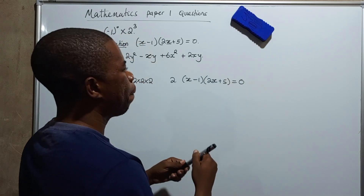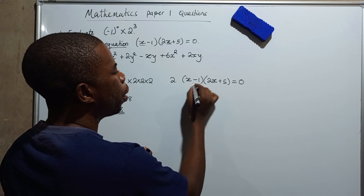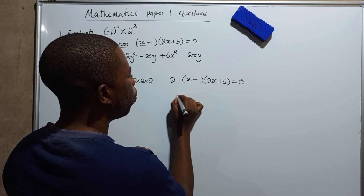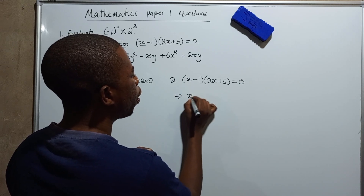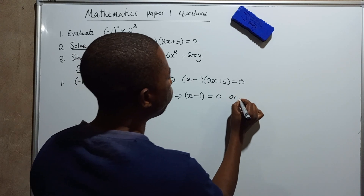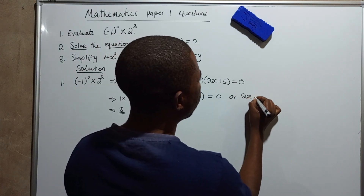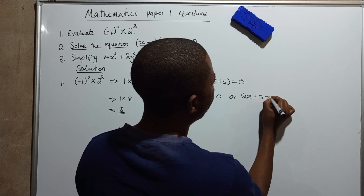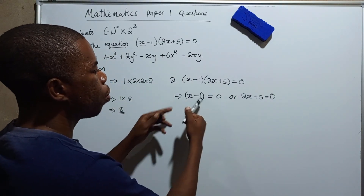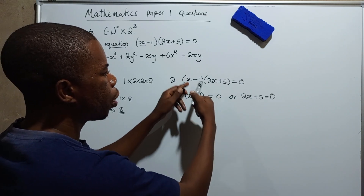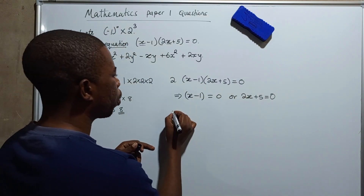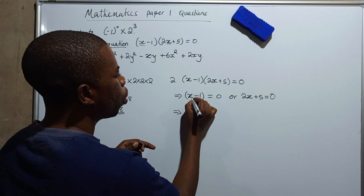So we say: either x minus one equals zero, or two x plus five equals zero. That is how we split it — for the product to be zero, at least one of the factors must equal zero. We then go ahead and solve each equation separately for x.